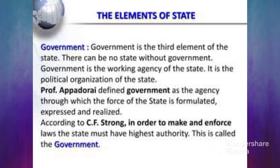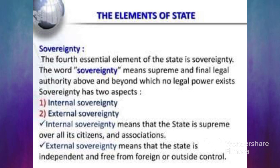Last and the most most important element of the state is sovereignty. Sovereignty is the essential element of the state. چاہے state کے پاس population ہو، territory ہو، government ہو — لیکن sovereignty نہیں تو state کا کوئی وجود نہیں۔ Sovereignty ایک supreme authority اور final legal authority ہے جو ایک ریاست کے پاس ہوتی ہے۔ Sovereignty دو قسم کی ہے: internal sovereignty اور external sovereignty۔ Internal sovereignty کا مطلب: the state is supreme over all its citizens۔